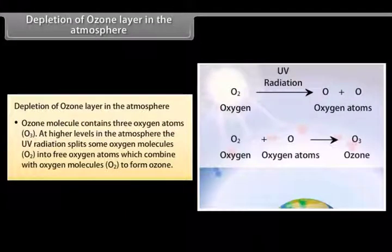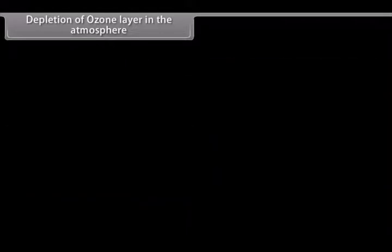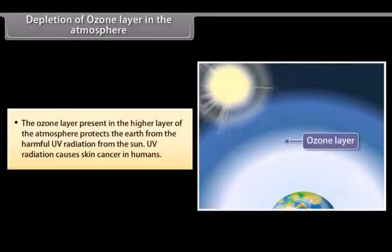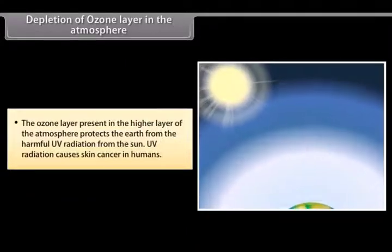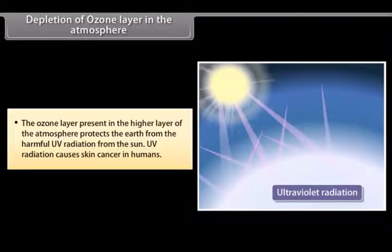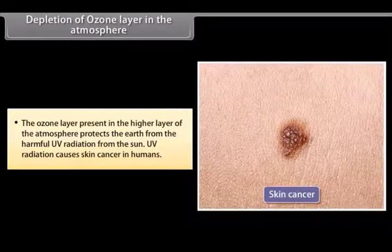to form ozone. The ozone layer present in the higher layer of the atmosphere protects the earth from the harmful UV radiation from the sun. UV radiation causes skin cancer in humans.